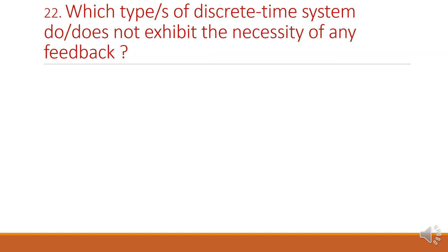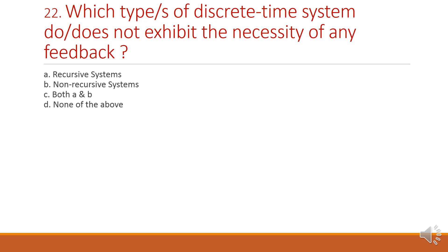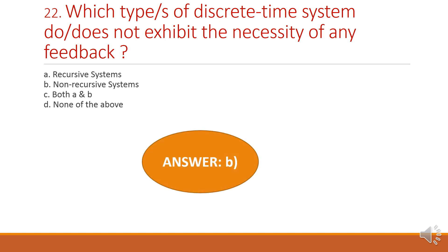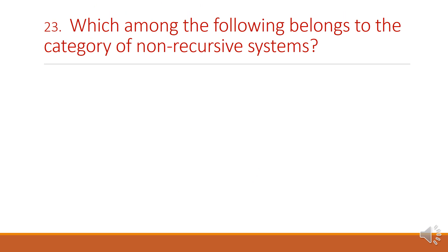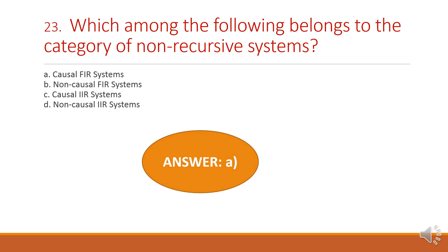Next question: which type of discrete time system does not exhibit the necessity of feedback? If there is no feedback, then it is called a non-recursive system. Option B is the right answer. The best example is FIR. Among the following, the category of non-recursive system is option A: causal FIR system.